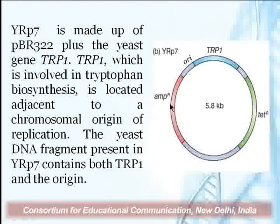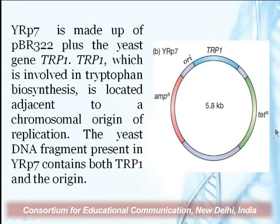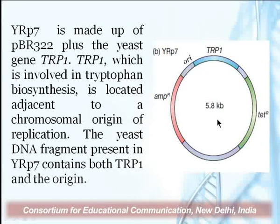An example of a YRP contains the TRP1 gene along with an origin of replication. The basic framework of this plasmid is again pBR322, but it does contain a yeast fragment with a particular gene and an origin of replication. The DNA fragment present has a gene which can be used for selection; antibiotic resistant genes can also be used. Importantly, they also contain an origin of replication for replicating inside the yeast host cell.